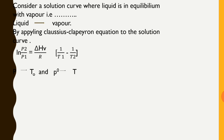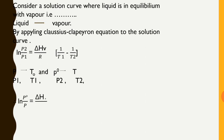And when pressure is P0, the temperature is T. Giving names: P1 = P, T1 = T0, P2 = P0, T2 = T. Putting these values into the equation, we get: ln(P0/P) = (ΔHv/R) × (1/T0 − 1/T).